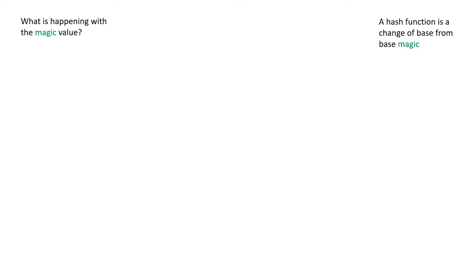A hash function, in this case, is actually just a change of base from the number base represented by our magic number. And the loop you see, well that's just implementing this change of base. Let's look at how this works.